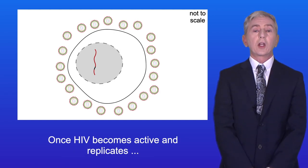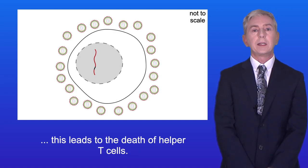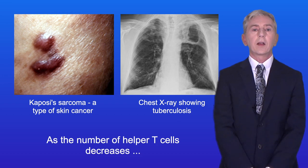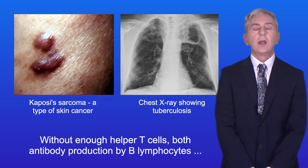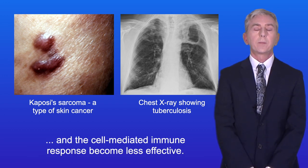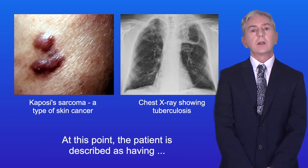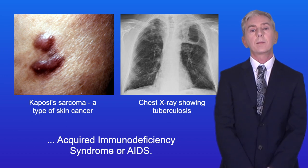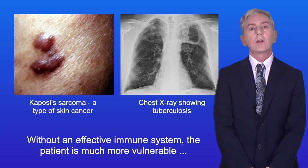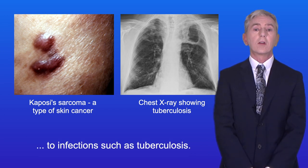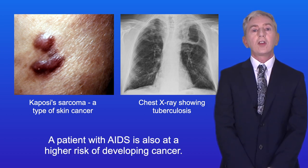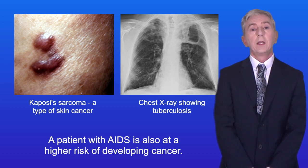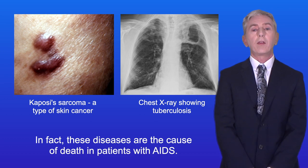Once HIV becomes active and replicates, this leads to the death of helper T cells. As the number of helper T cells decreases, the patient's immune system can no longer function effectively. Without enough helper T cells, both antibody production by B lymphocytes and the cell-mediated immune response become less effective. At this point the patient is described as having acquired immunodeficiency syndrome, or AIDS. Without an effective immune system the patient is much more vulnerable to infections such as tuberculosis — scientists refer to these as opportunistic infections. A patient with AIDS is also at a higher risk of developing cancer, and in fact these diseases are the cause of death in patients with AIDS.